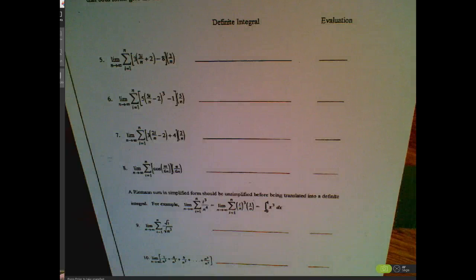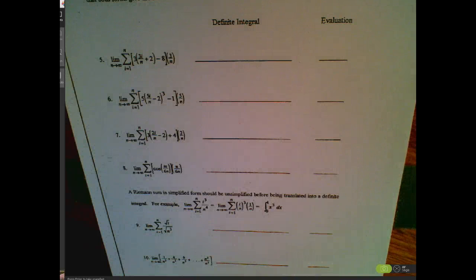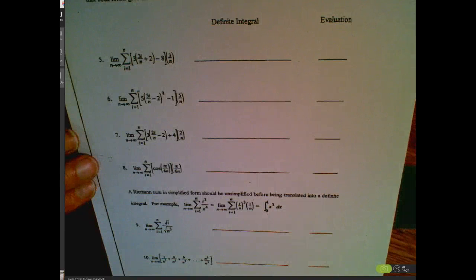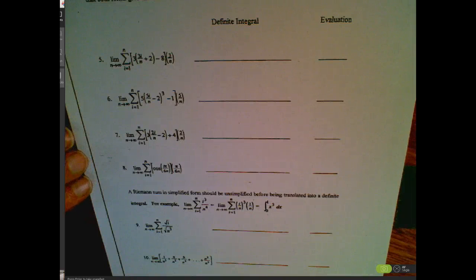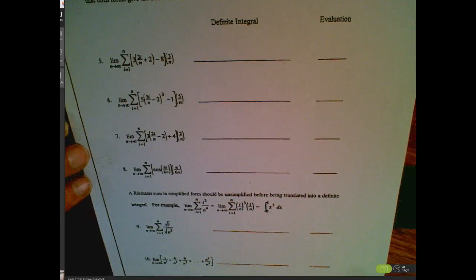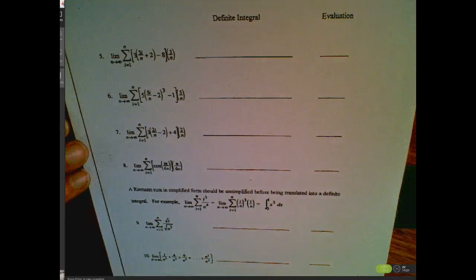In our last video we worked on taking a definite integral and writing it as a Riemann sum. Here we're going to work backwards — we're going to dissect the Riemann sum and evaluate what definite integral it represents, because in most cases it will be easier to determine that value using our anti-differentiation techniques. So let's go ahead and attack this.